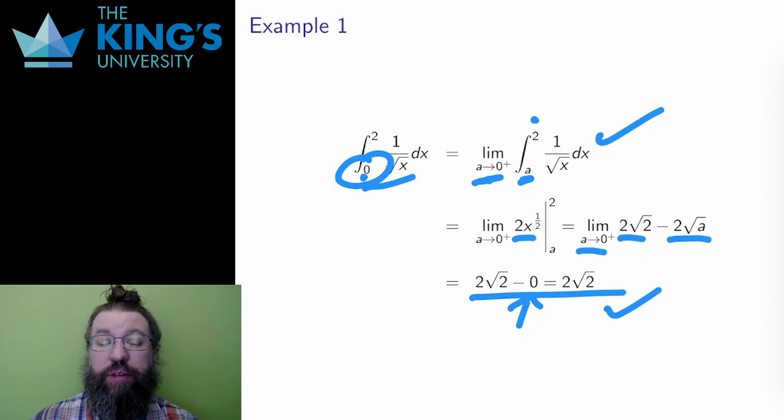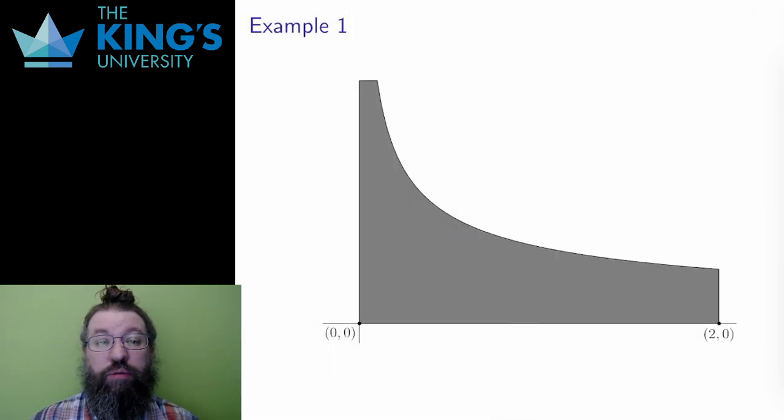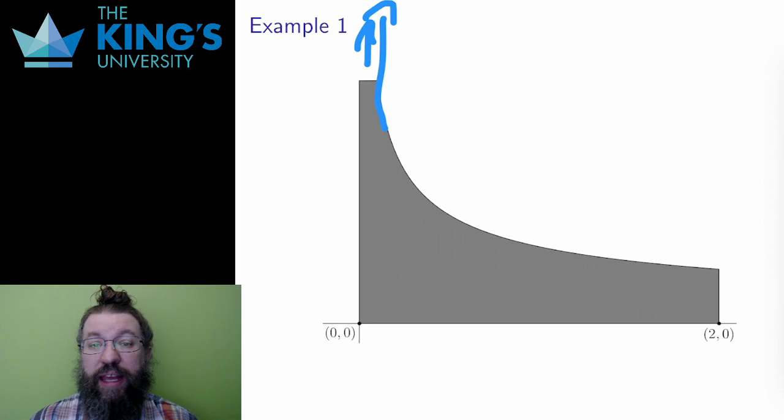Here is the graph of this function. It shoots up to infinity as it gets closer to the y-axis. But what the improper integral says is that even though the value of the function is going to infinity, the area under the curve is actually finite. This is a strange thing, but it is possible.